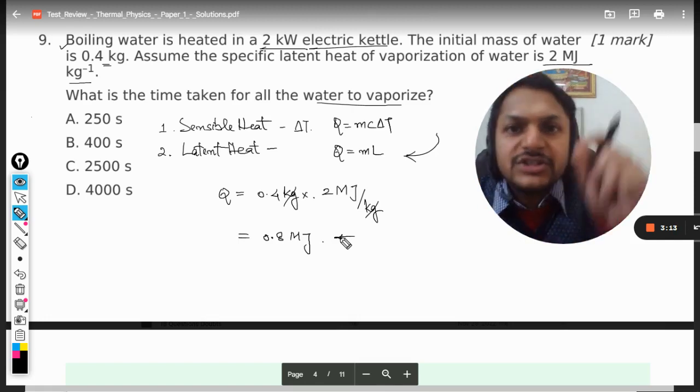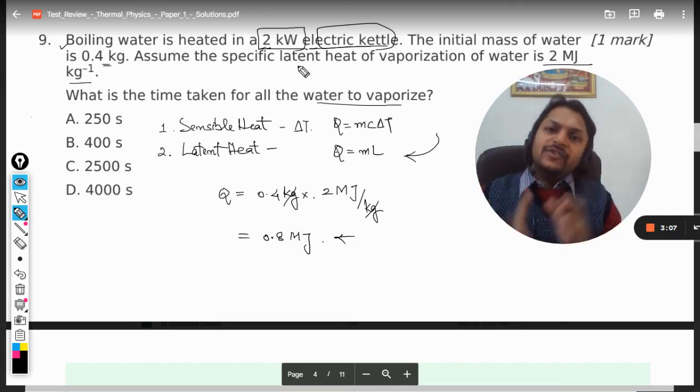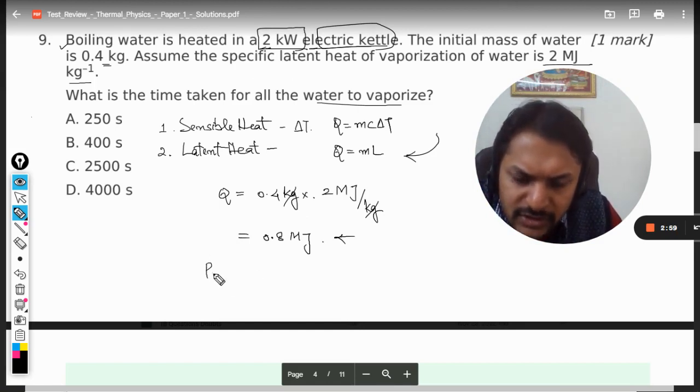Now the question is in how much time. So now we concentrate on the heating coil in the electric kettle. It is having the rating of 2 kilowatt, so the power can be taken as 2 kilowatt, that is 2 kilojoule per second.